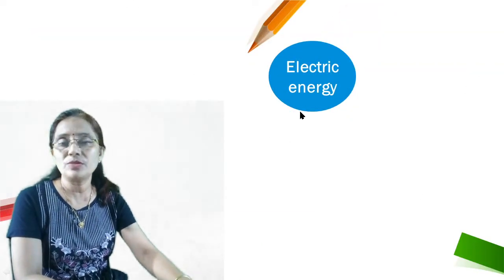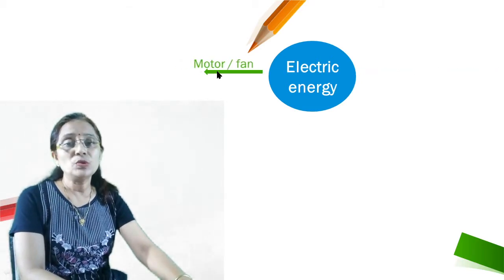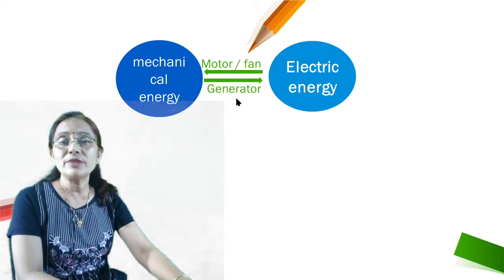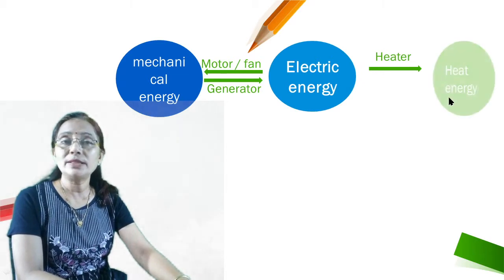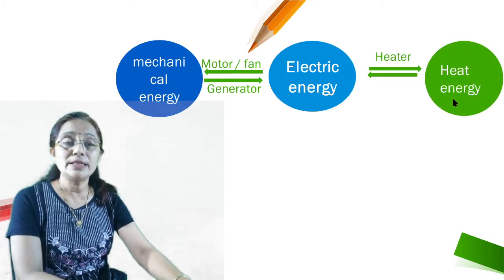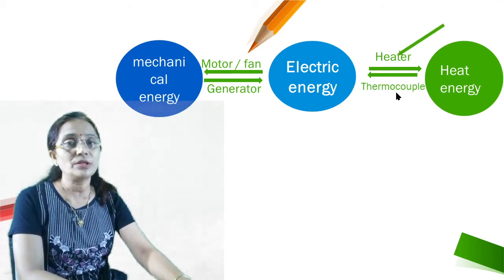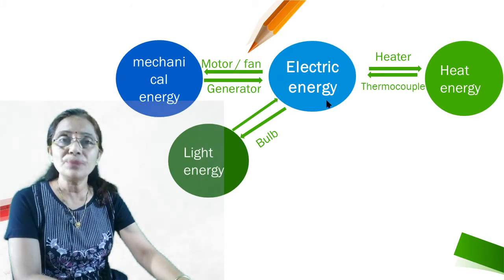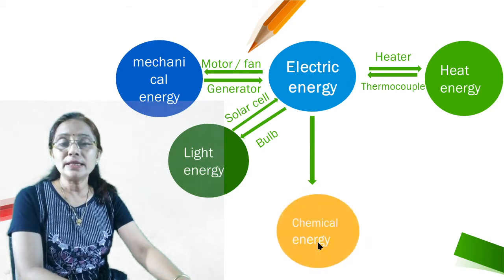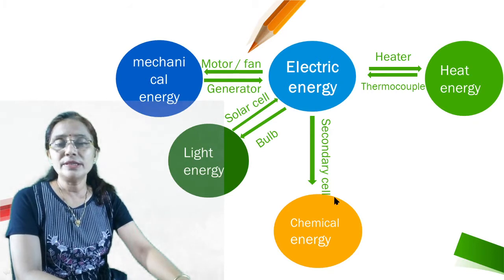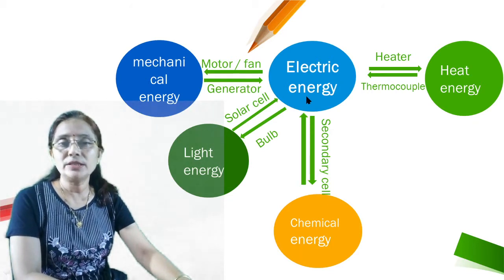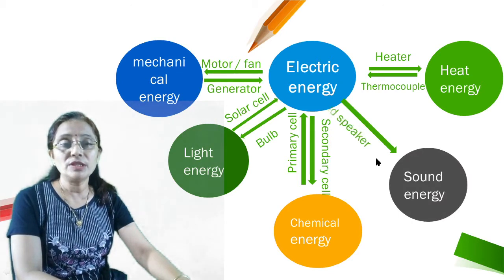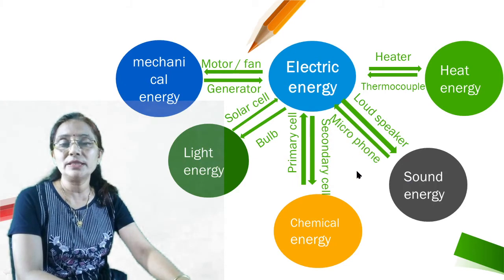Transformation of energy: Electrical energy used by a motor or fan is converted into mechanical energy. A generator converts mechanical energy into electrical energy. Electrical energy used by a heater is converted into heat energy, and a thermocouple converts heat energy into electrical energy. Electrical energy used by a bulb is converted into light energy, while a solar cell converts light energy into electrical energy. A secondary cell converts electrical energy into chemical energy, and a primary cell converts chemical energy into electrical energy. A loudspeaker converts electrical energy into sound energy, and a microphone converts sound energy into electrical energy.